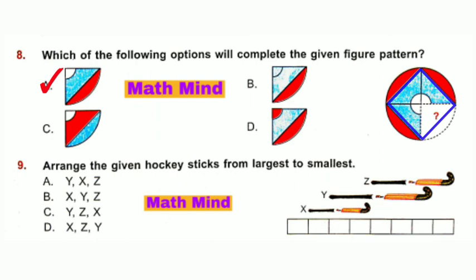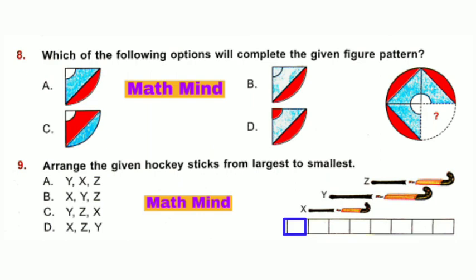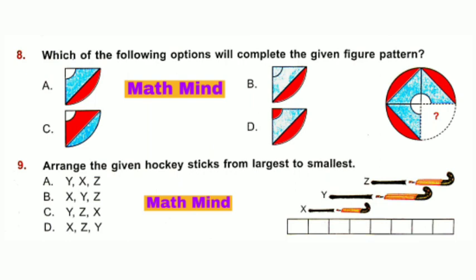Question number 9: Arrange the given hockey sticks from largest to smallest. Taking a rectangle as one unit, X is 3 units, Y is 5 units, Z is 4 units. Arranging largest to smallest, that is descending order, we get Y, Z and X. Y is greater than Z, Z is greater than X. So, option C is correct.